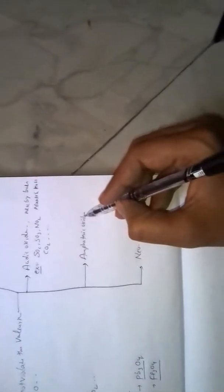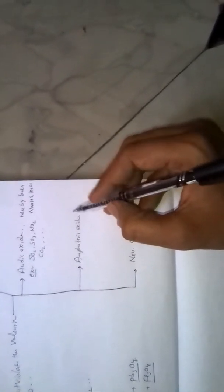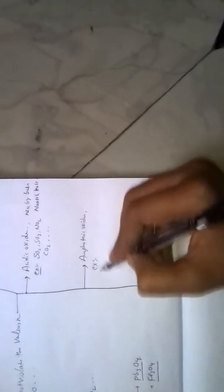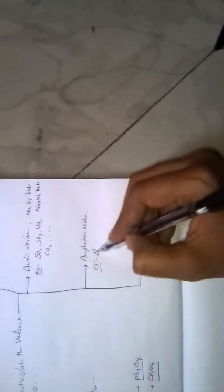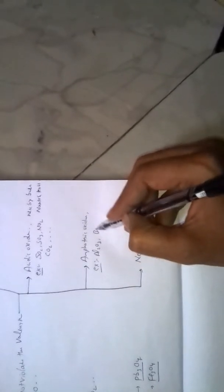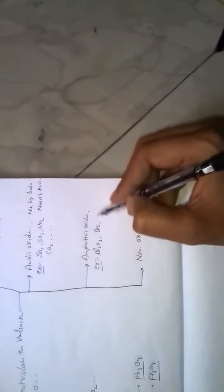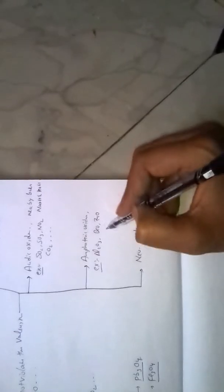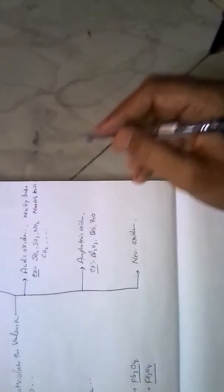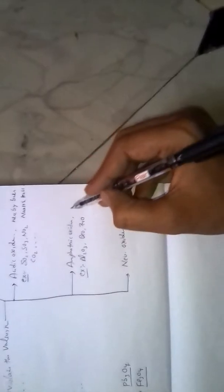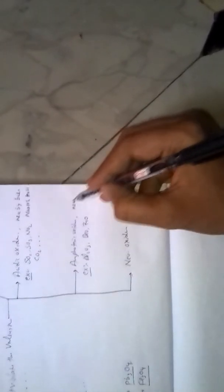Amphoteric Oxides are generally formed by metalloids, but some metals also form amphoteric oxides. Examples of amphoteric oxides are Al2O3, BeO, ZnO. These are neutralized by both acids and bases.